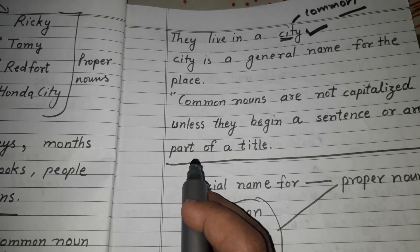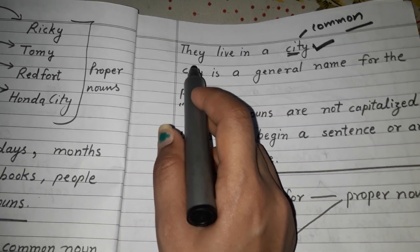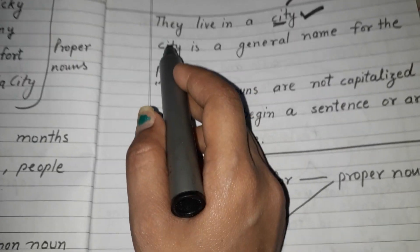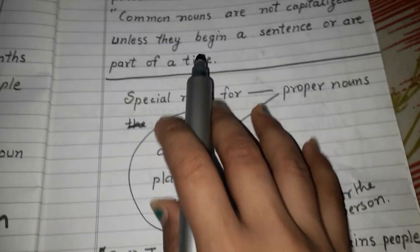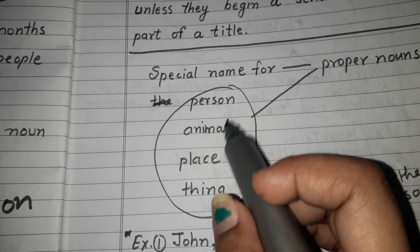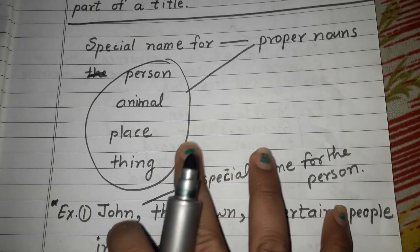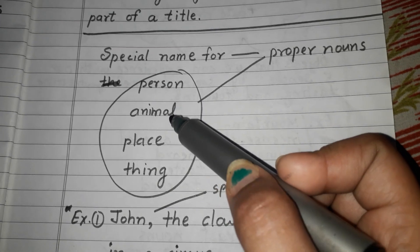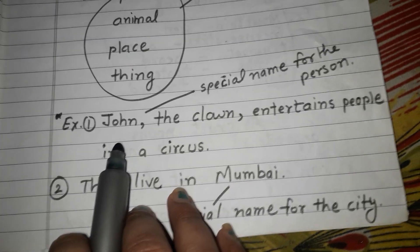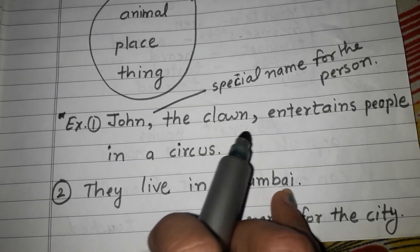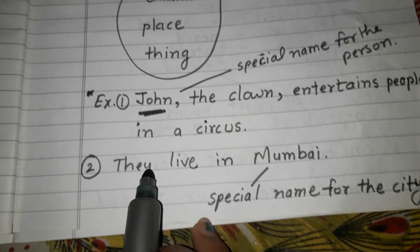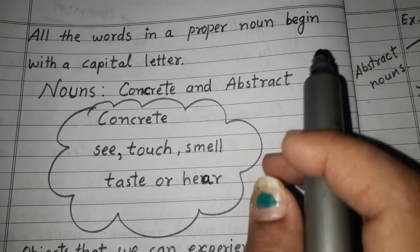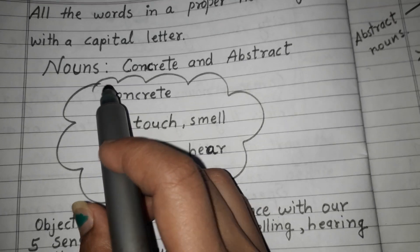If a common noun begins a sentence, it is written with a capital letter — for example, 'City' at the start of a sentence. A proper noun is a special name for a person, animal, place, or thing. For example: 'John the clown entertains people in a circus' — John is the proper noun. 'They live in Mumbai' — Mumbai is a proper noun. All words in a proper noun begin with a capital letter.